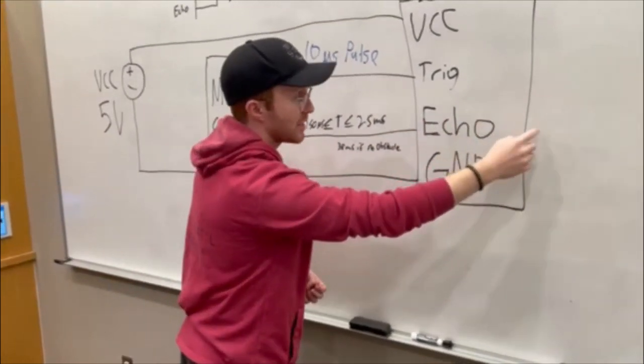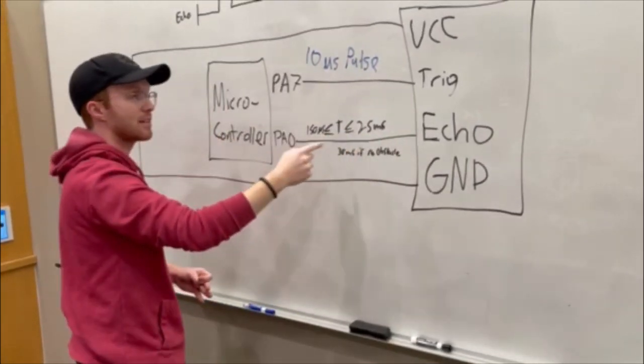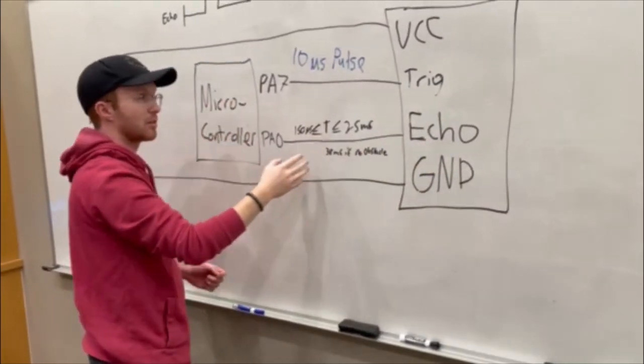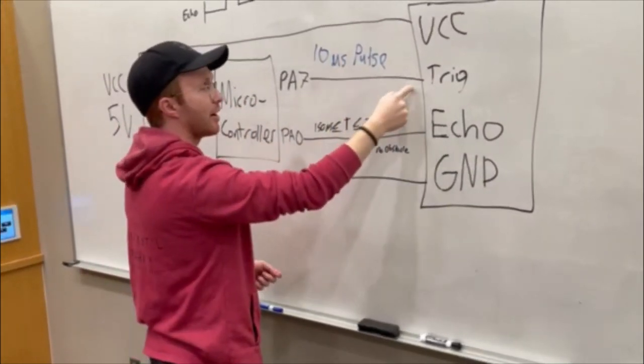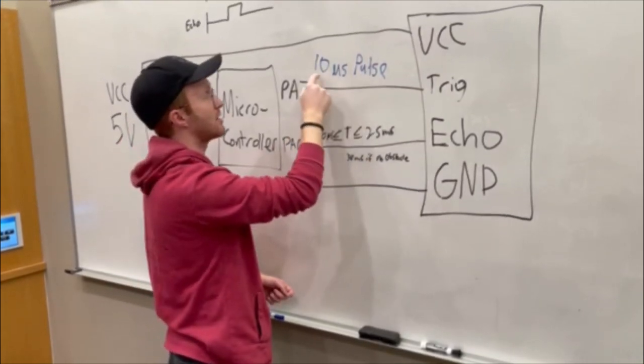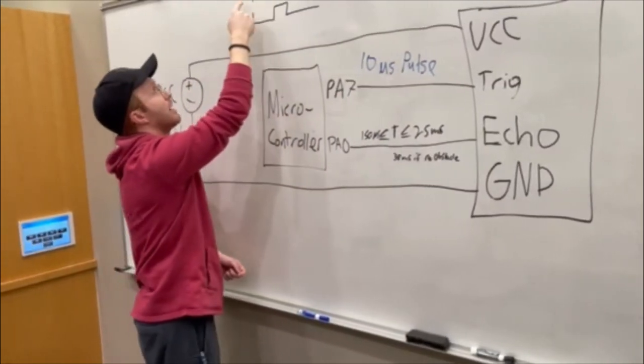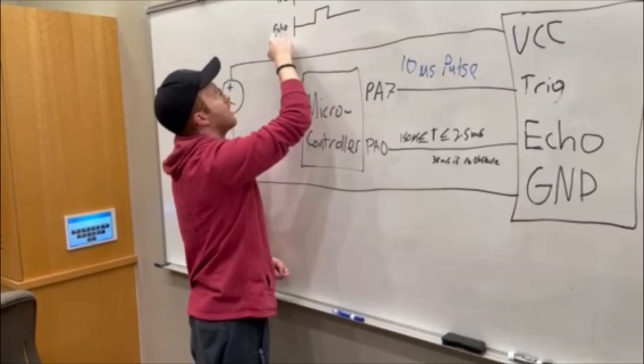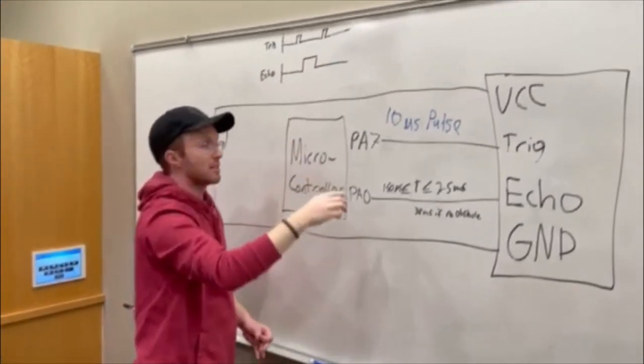Then it waits to receive an echo from the object. The time between the trigger and the echo determines the distance traveled. The trigger is a 10-microsecond pulse. After triggering, it waits to receive an echo, and the width of this echo corresponds to the distance.